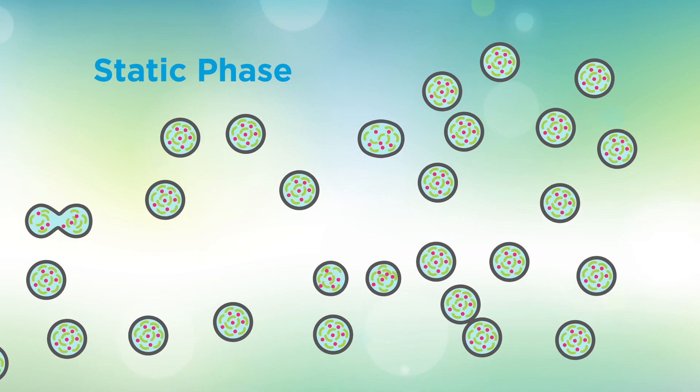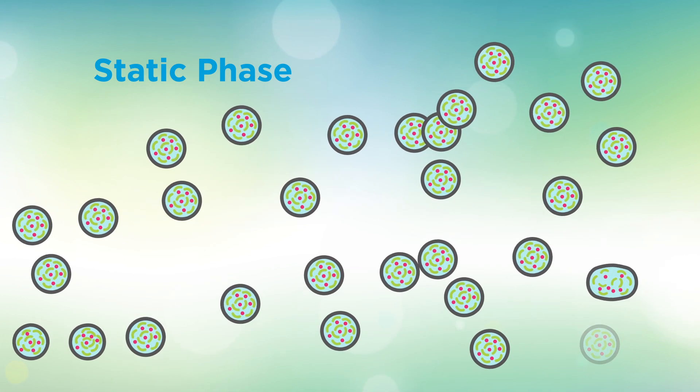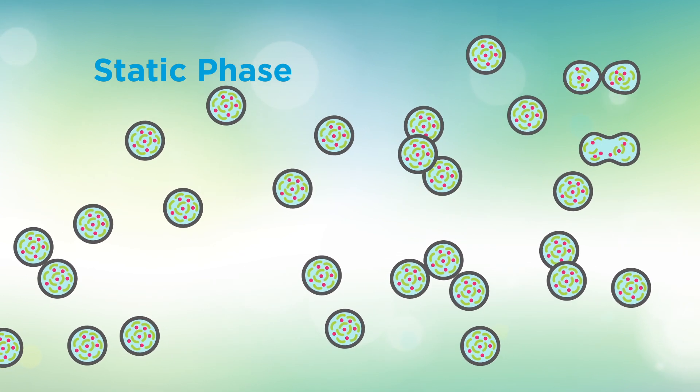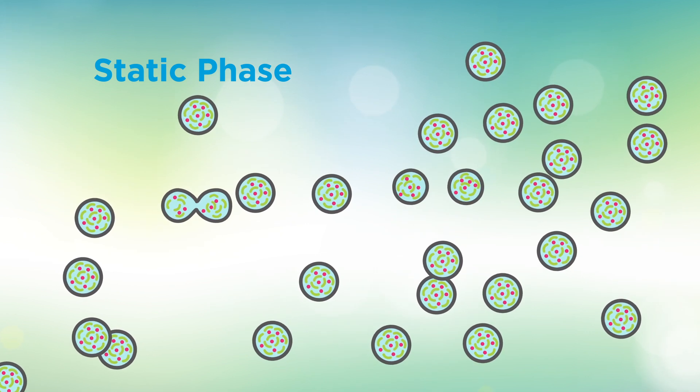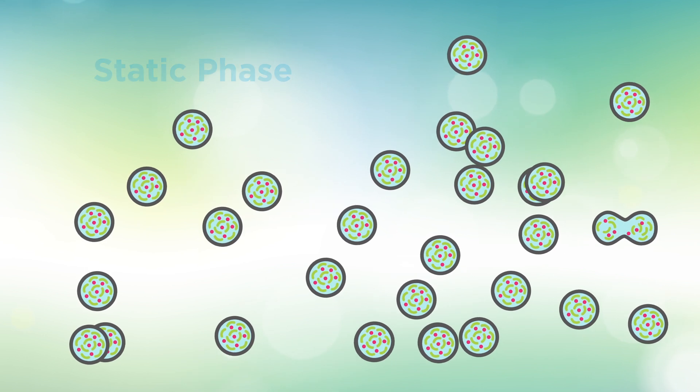Static or Stationary phase: Bacteria enter this phase when growth and death rates are equal. It kicks in when the nutrients needed for replication are depleted, or the waste generated from replication blocks further growth.